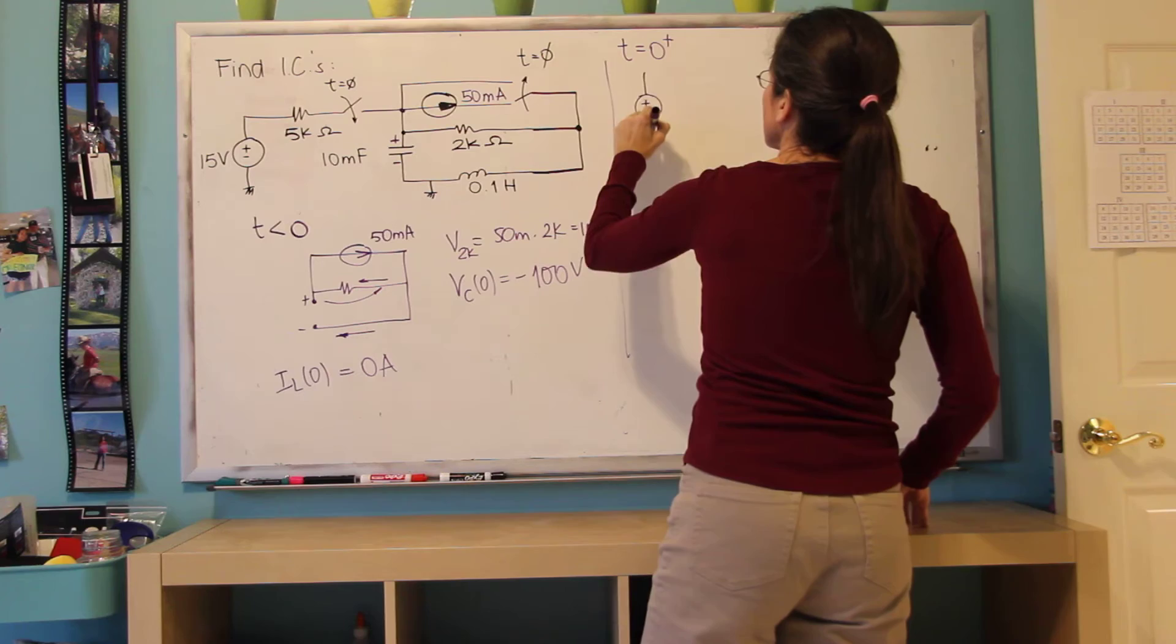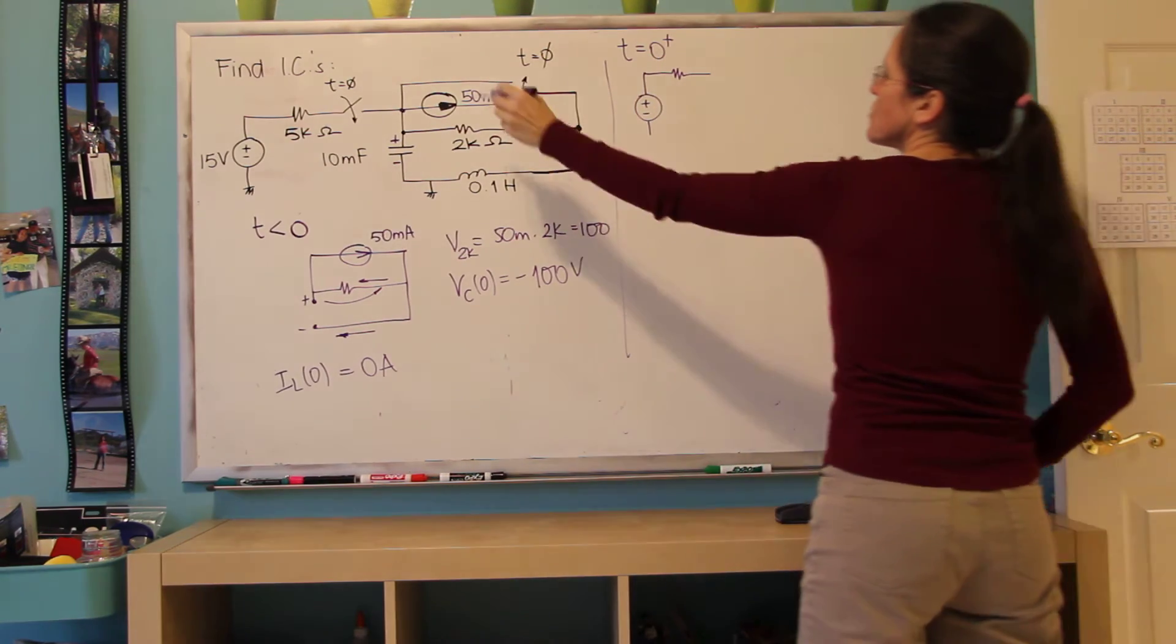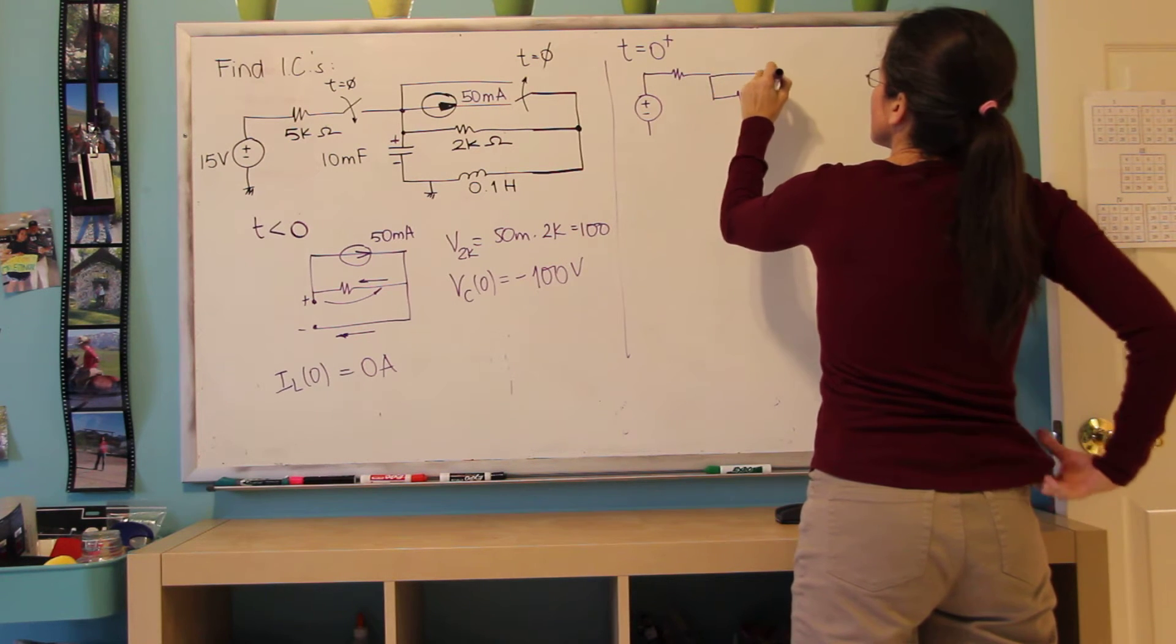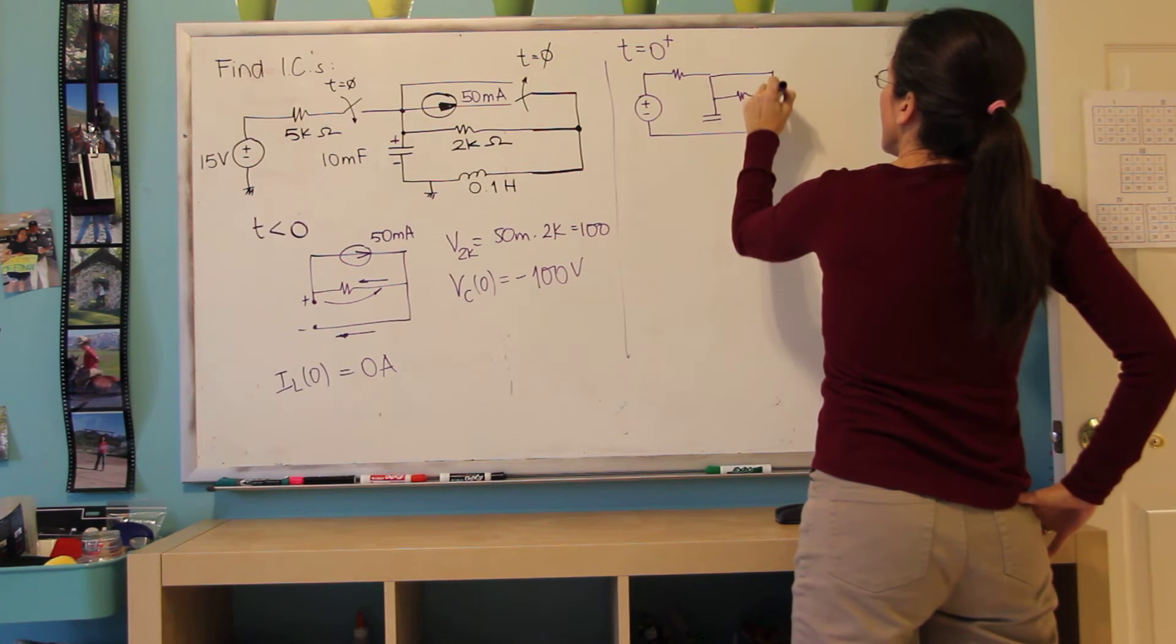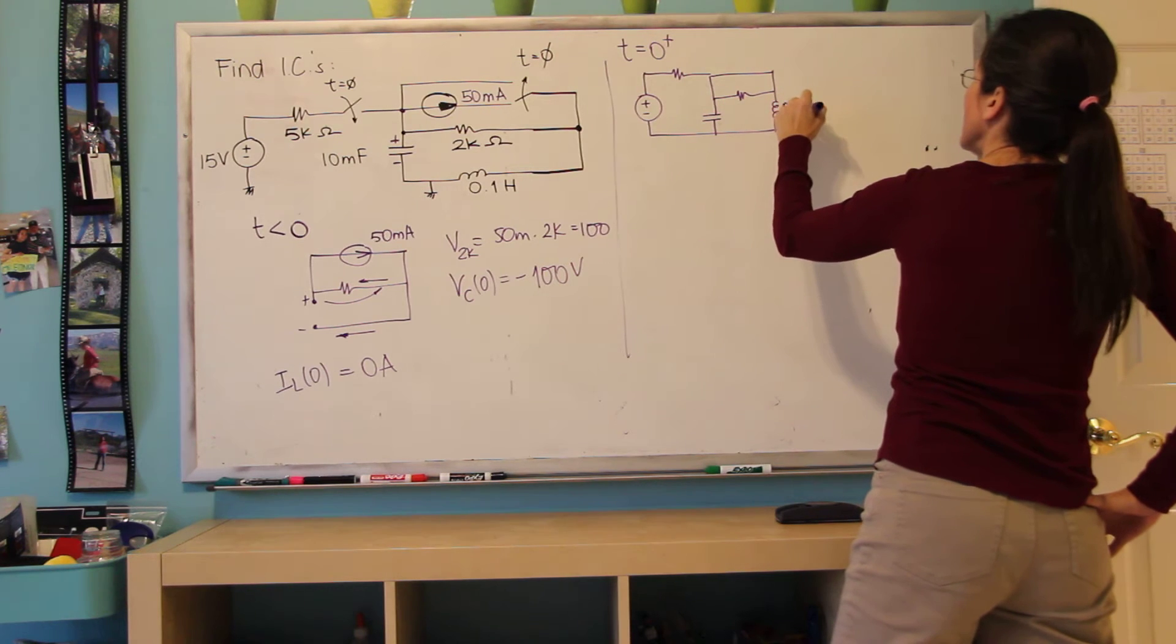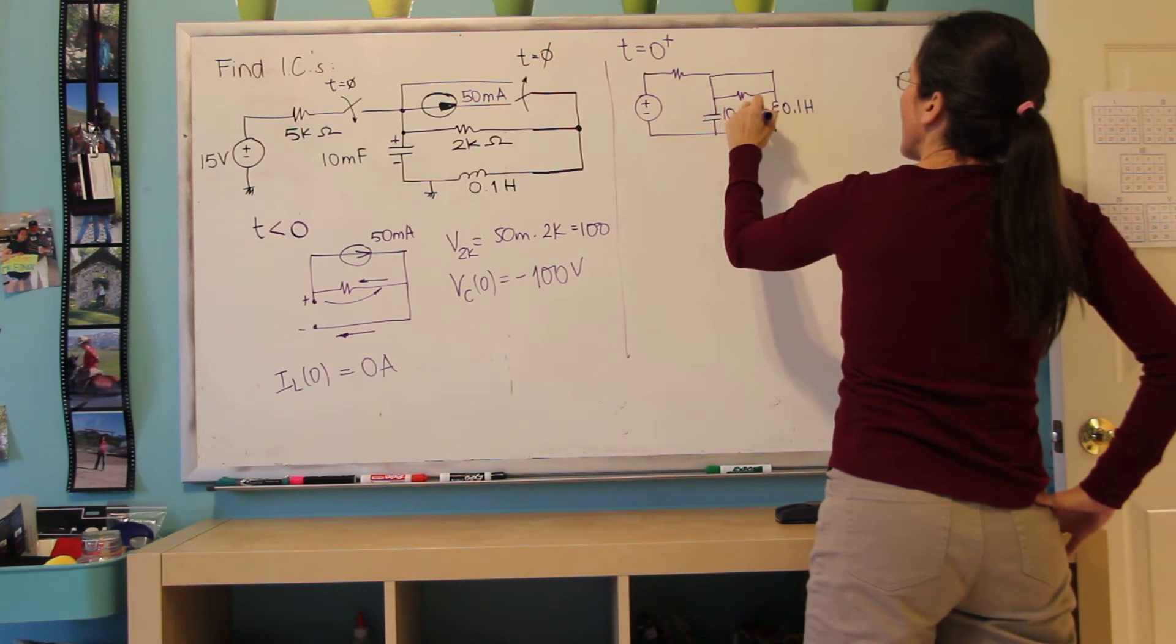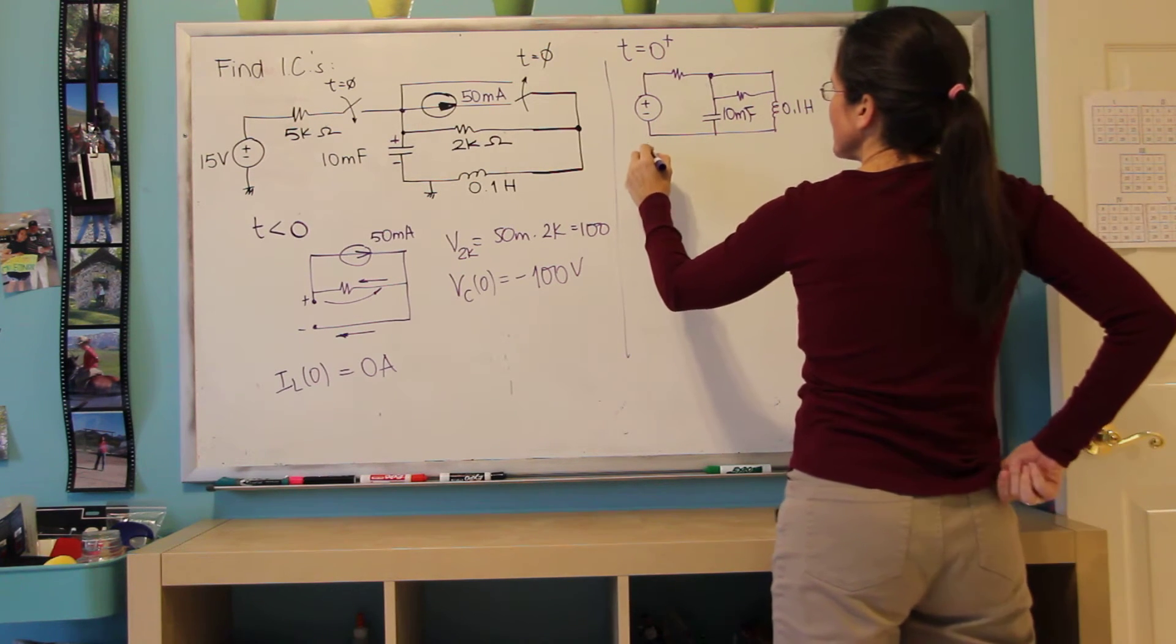15 volts with the 5k. And now this is shorted, which shorts out this 2k. And I'm putting this inductor here. So 2k is going to come out. And it's going to be much simplified.